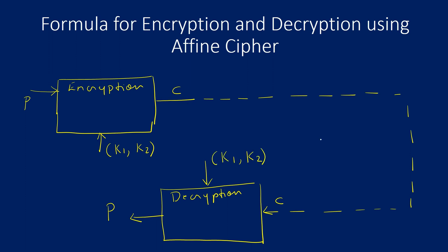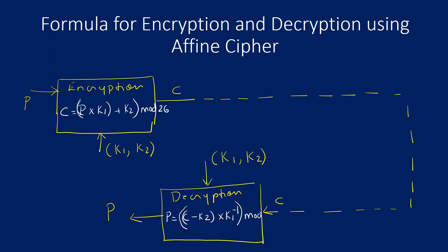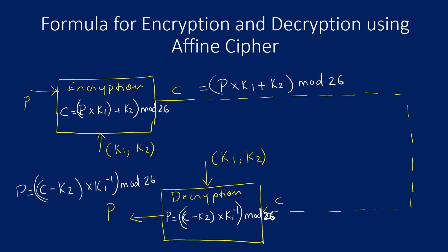The Affine cipher generates the ciphertext using the formula: plaintext multiplied by k1, added with k2, modulo 26. Decryption recovers the plaintext by subtracting k2 from the ciphertext and multiplying by the modular multiplicative inverse of k1, modulo 26. So the ciphertext formula is (P × k1 + k2) mod 26, and the plaintext formula is (C − k2) × k1⁻¹ mod 26.